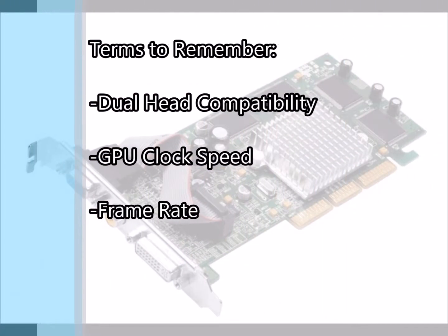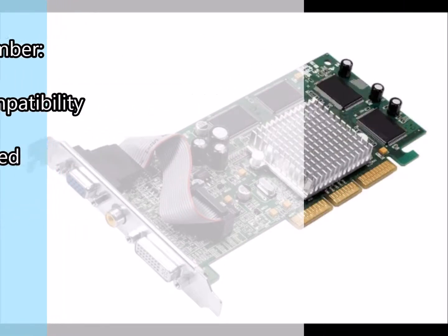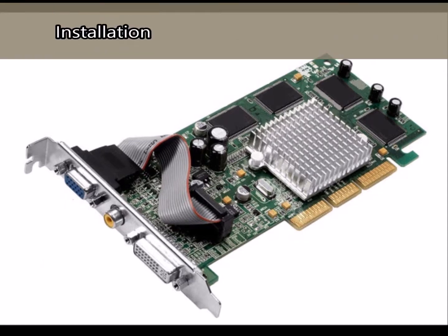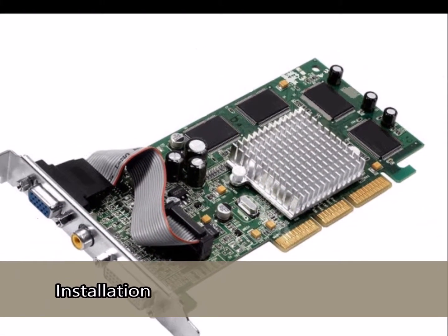Here are a few terms to remember when looking at graphics cards. Dual head compatibility is the ability for a graphics card to support two monitors at once. GPU clock speed is the speed that the GPU can execute instructions, measured in megahertz. Lastly, frame rate is a measurement of images displayed per second — most games run at about 60 frames per second, while movies run at about 48 or even 72 frames per second. Now that you know what each part does and the terms to think about, let's learn how to install a graphics card.